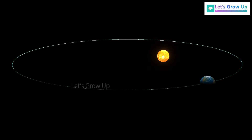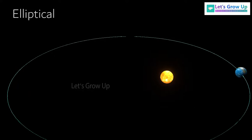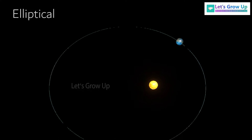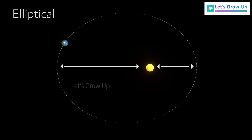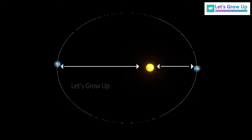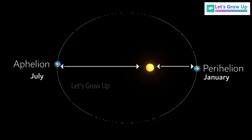We know that the Earth's orbit is not a perfect circle — it is elliptical. Which means that the distance between the Earth and sun varies somewhat through the year. When the Earth is nearest to the sun it is called perihelion, and it is in January. But when our Earth is farthest away from the sun it is called aphelion, and it is in July.